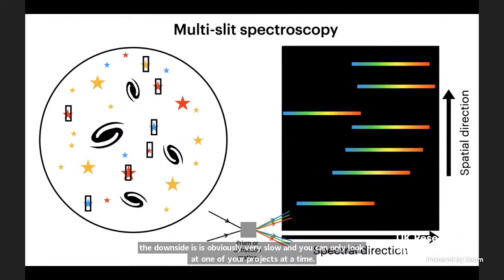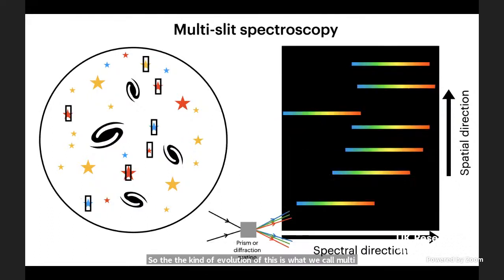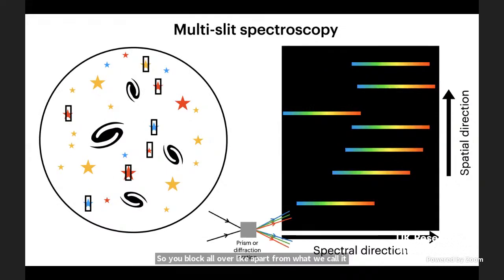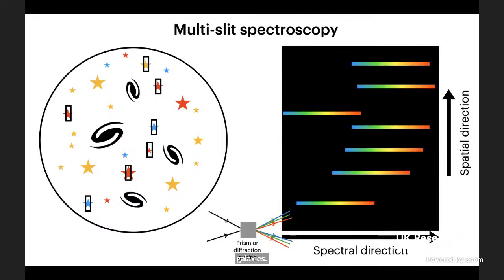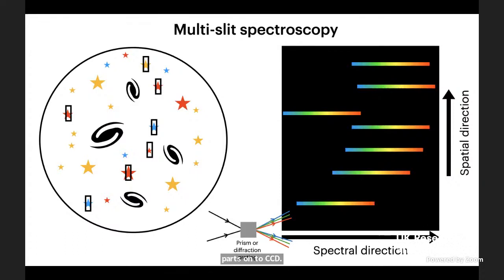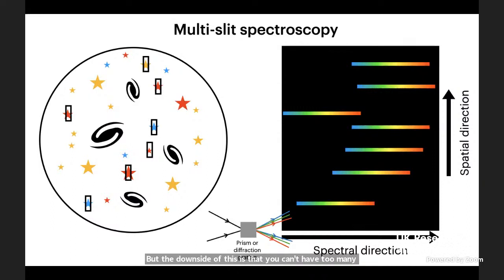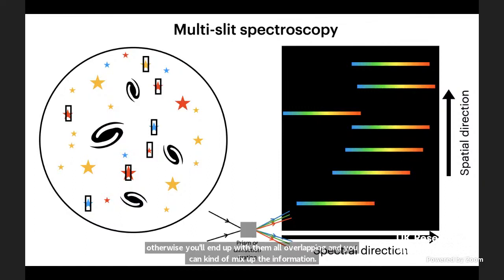The evolution of this is what we call multi-slit spectroscopy. You block all of the light apart from a few slitlets and let the light in on those particular parts of the sky — whether stars or galaxies. You spread each of those out into their constituent parts onto your CCD, getting multiple different spectra at once. The downside is that you can't have too many on top of each other without them overlapping and mixing up the information.